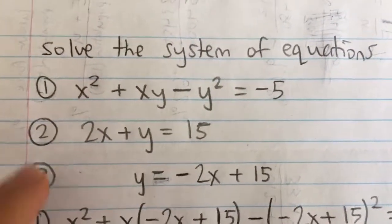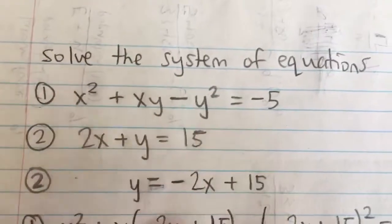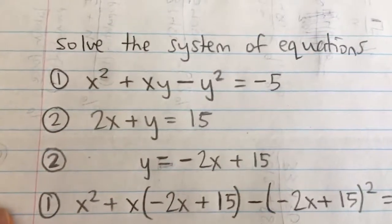Solve the system of equations. Here we have our first equation being x squared plus xy minus y squared equals negative 5, and the second equation being 2x plus y equals 15.